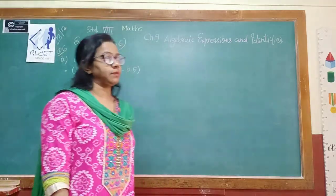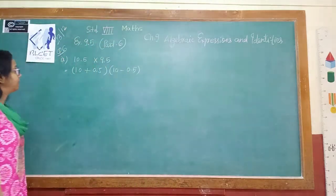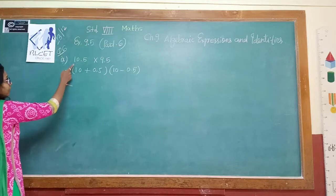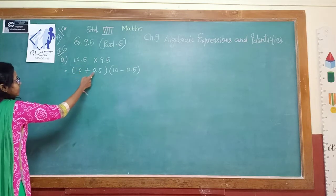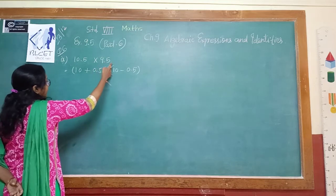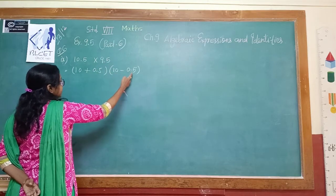See the last question, number 6: 10.5 multiplied by 9.5. How will you write 10.5? As 10 plus 0.5. And how will you write 9.5? 10 minus 0.5.